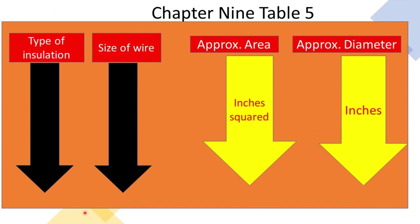Chapter 9 Table 5 looks very similar to Annex C, but make sure you're in Table 5 and not Table 5A — just like Annex C, there's an A version that is only for compact conductors. In Table 5, start on the left-hand side to find your type of insulation, then cross over to find your wire size, then find the approximate area in inches squared. We're not dealing with diameter here — we want the area column.